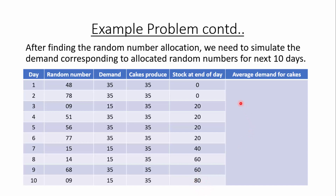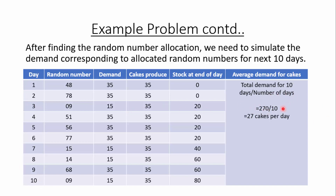Now we need to find the average demand. The average demand for cakes is total demand for 10 days divided by the number of days. Adding up all the demand values over 10 days gives a total of 270 cakes. So average demand = 270 ÷ 10 = 27 cakes per day.